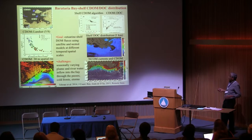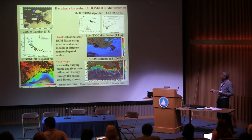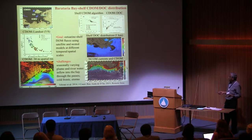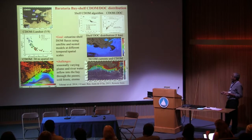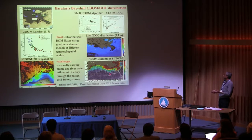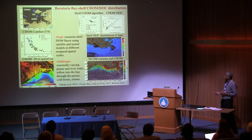Looking at the shelf processes, we have also developed some algorithms for MODIS. We have a pretty strong relationship between DOC and CDOM as shown here. We applied that to a one-kilometer MODIS image and have DOC spatial distributions for the whole shelf. Here we have looked at simulated salinity and current vectors overlaid on the CDOM concentrations. During cold front events, we see that the currents are pushing the CDOM and DOC out of the bays into the inner shelf and further out into the outer shelf. These events are very important, and the goal is to link them at different spatial and temporal scales.